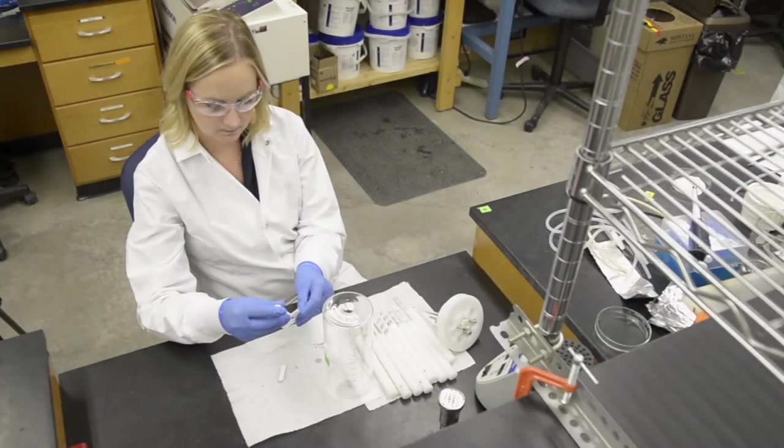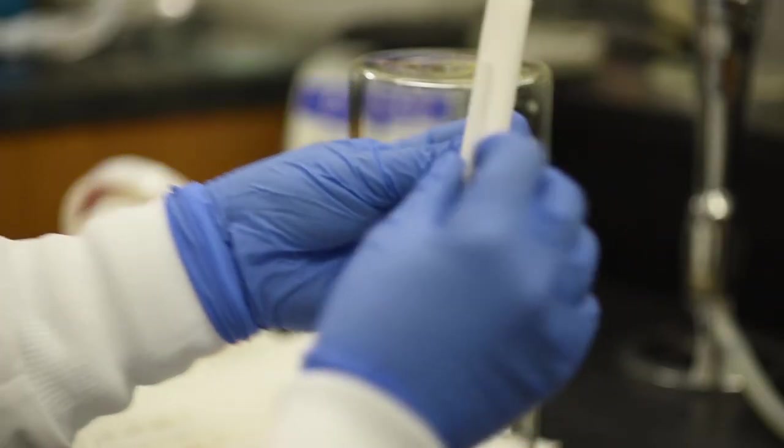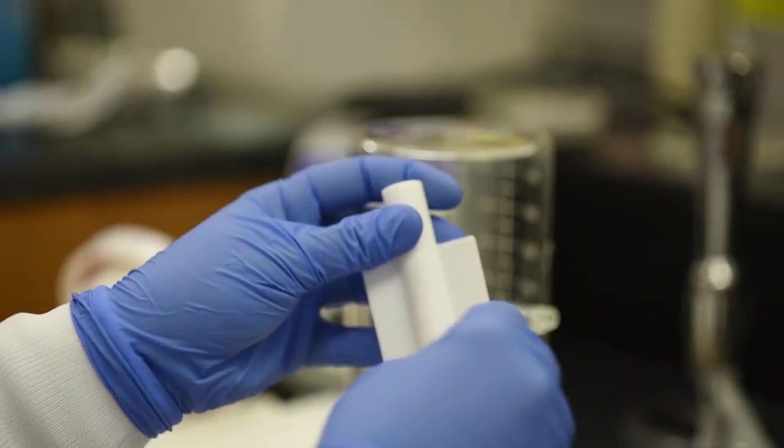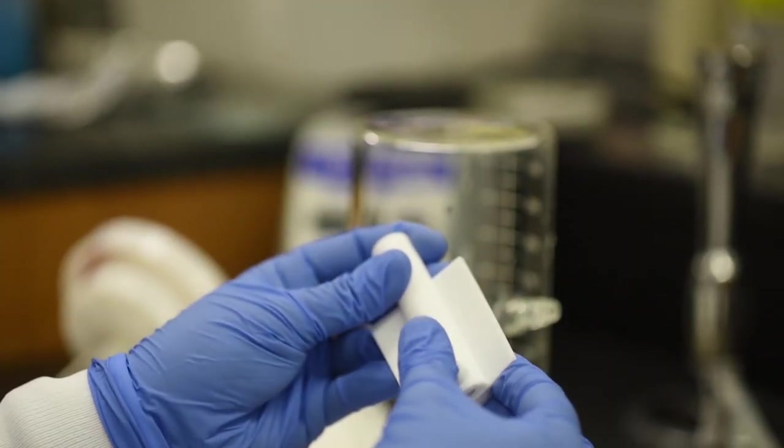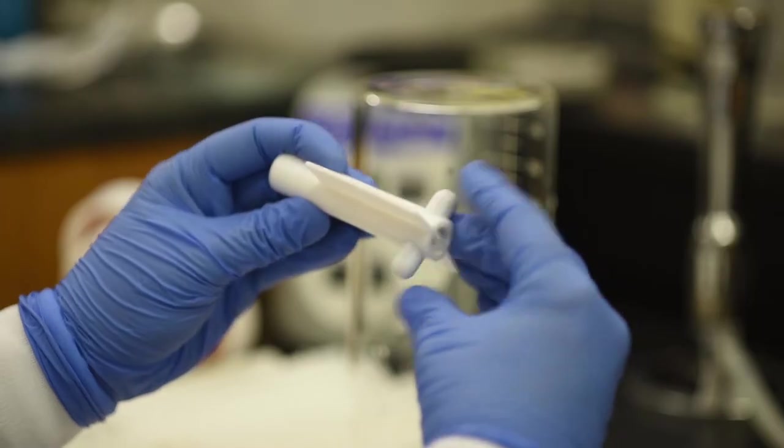Fit the baffle blade into the cylindrical baffle holder so that the blade is aligned in the vertical notches. Slide the magnetic stir bar through the blade and cylindrical holder. Confirm that the stir bar is centered in the assembled baffle.